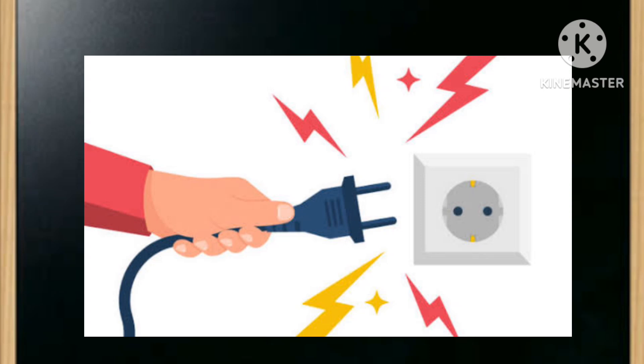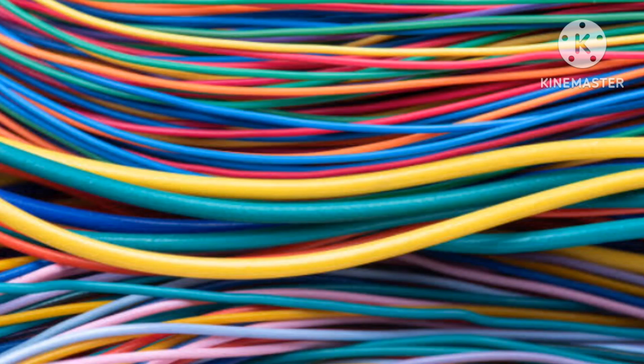When we come in contact with a conductor, there occurs a flow of electrons from one body to another. This is the reason we experience shock. Shock is basically a mini feeling of current passing through the body. Let us learn more about conductors and insulators.